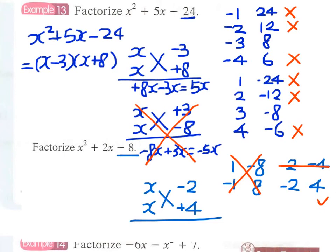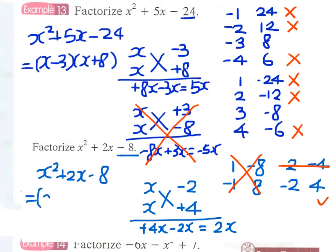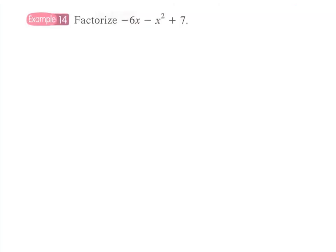Using cross multiplication: x times plus 4 gives plus 4x, and minus 2x; combining these gives plus 2x, matching the middle term plus 2x and confirming the factorization is correct.